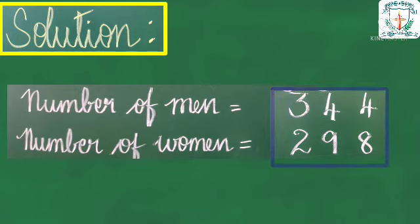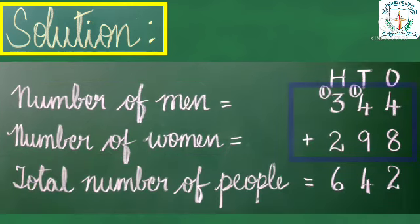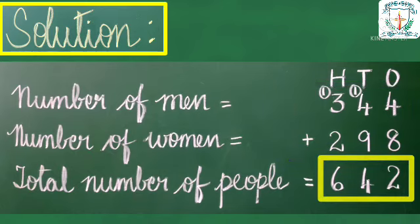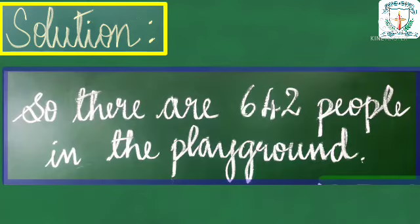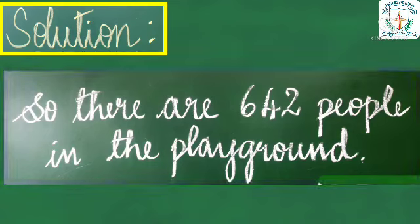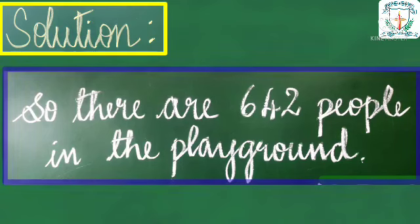Now, to find the total number of people, we need to add the number of men and women. So, total number of people is equal to 642. Therefore, there are 642 people in the playground.